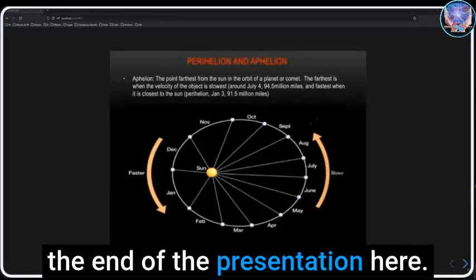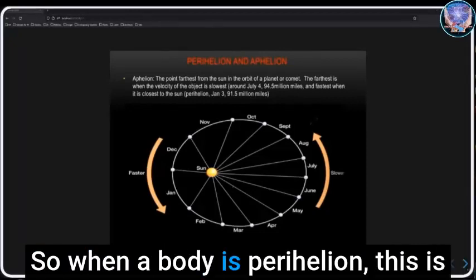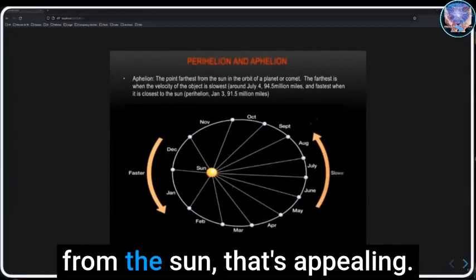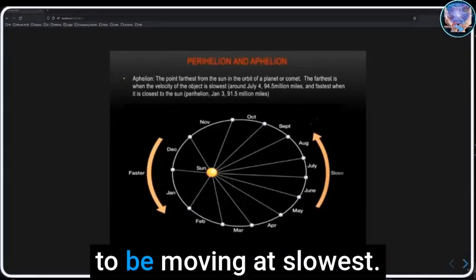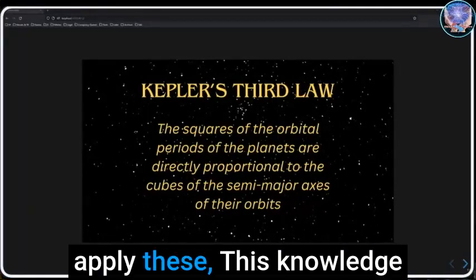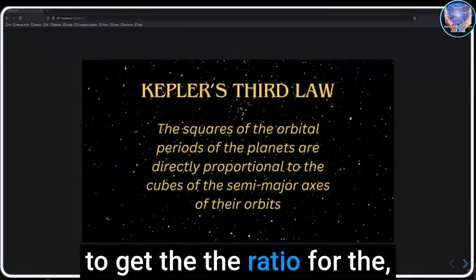To give a visual of that, we have a slide from Man of Stone's video that we're going to be touching on towards the end of the presentation here. When a body is perihelion, this is when it's going to be moving fastest. When it's furthest away from the sun, that's aphelion, and that's going to be moving its slowest.